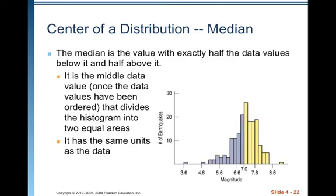The median is the value with exactly half the data values below it and half above it. It is the middle value, once the data values have been ordered, that divides the histogram into two equal areas. In a histogram, the data values are already ordered because of the scale across the bottom. But if you're looking at a list of data, make sure it's been ordered before you try to find the median. The median has the same units as the rest of the data.